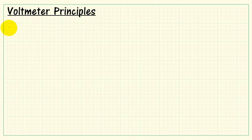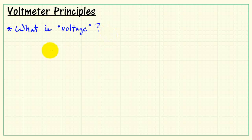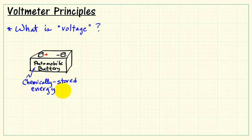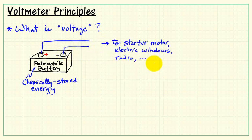Let's review the basic principles of a voltmeter. To begin with, let's discuss what is meant by the term voltage. Consider an automobile battery. A battery stores energy in chemical form. It has wires that connect the terminals to things such as an automobile starter motor, electric windows, the radio, and so forth.